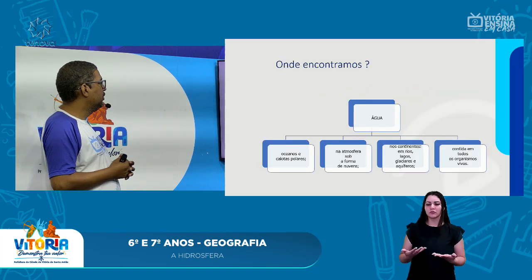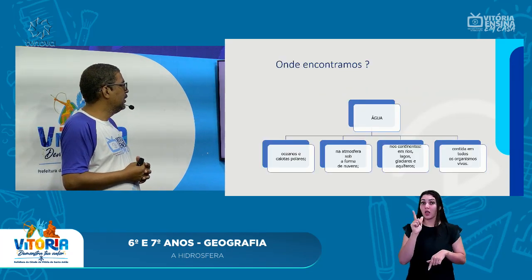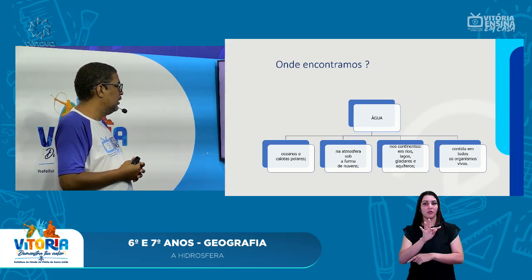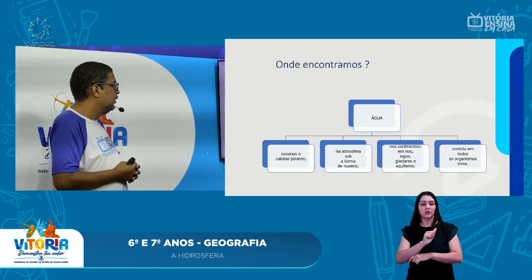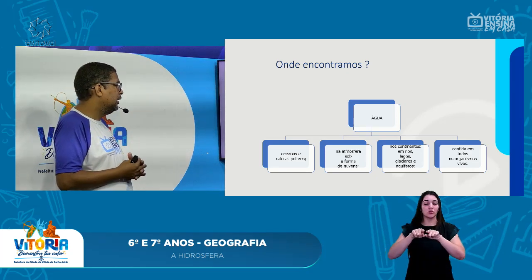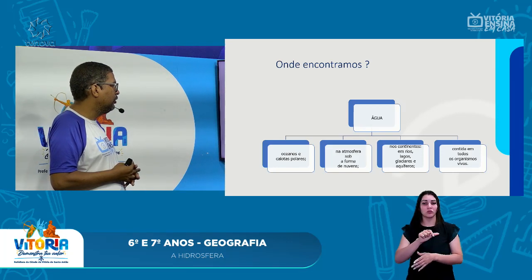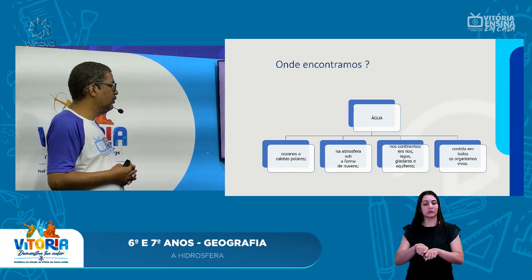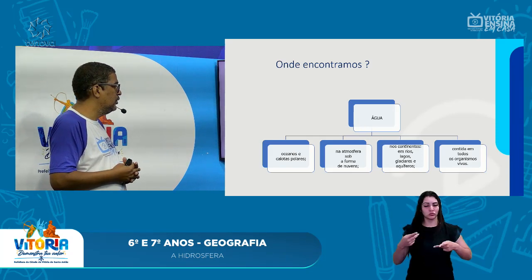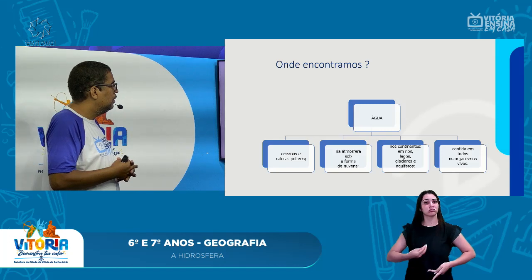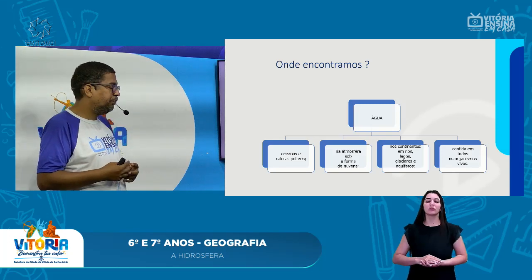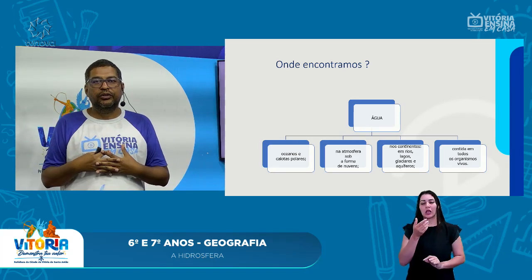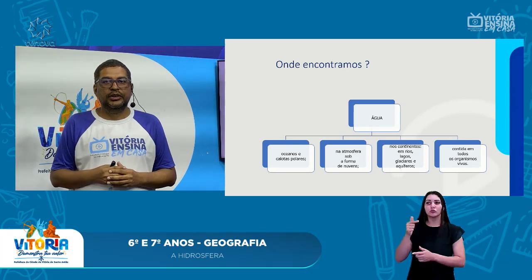Onde encontramos água? A água nós encontramos nos oceanos e calotas polares, na atmosfera sob a forma de nuvens e nos continentes, nos rios, lagos, glaciares e aquíferos. E também contida em todos os nossos organismos vivos, como o nosso corpo. Alguns organismos têm bastante presença de água, uns mais, outros menos, mas também no nosso organismo nós encontramos a água.